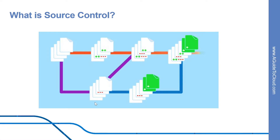Without version control, you are tempted to keep multiple copies of your code on your computer. This is dangerous. It's easy to change or delete a file in the wrong copy of code, potentially losing the work. Version control systems solve this problem by managing all versions of your code and presenting you with a single version at a time.